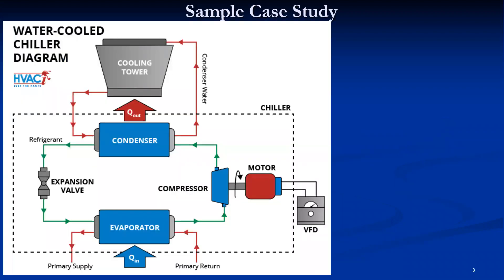This is the actual situation of the problem statement: a water-cooled chilled water plant, or chiller, used in a chilled water air conditioning system. The main purpose of the chiller is to produce chilled water at five to six degrees Celsius.